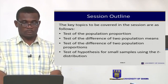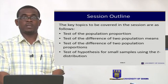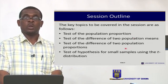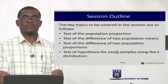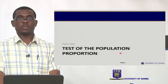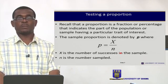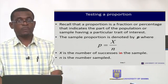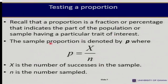We'll test for the proportion, the difference between two means, the difference between two proportions, and then test for sample sizes that are small using the t distribution. The proportion is a fraction or percentage that indicates the part of the population or sample having a particular characteristic or trait. For a sample proportion P, it is X over N, where X is the number of successes in the sample and N is the sample size.